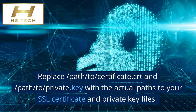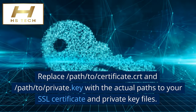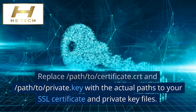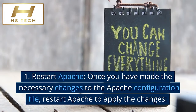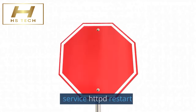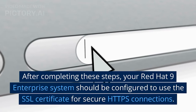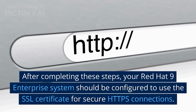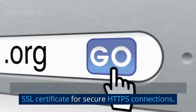Replace /path/to/certificate.crt and /path/to/private.key with the actual paths to your SSL certificate and private key files. Step 4: Restart Apache. Once you have made the necessary changes to the Apache configuration file, restart Apache to apply the changes using: service httpd restart. After completing these steps, your Red Hat 9 Enterprise system should be configured to use the SSL certificate for secure HTTPS connections.